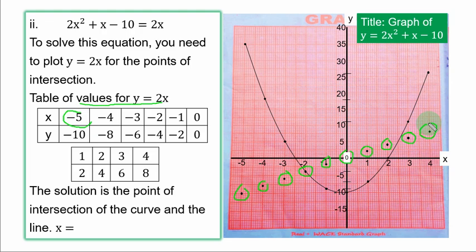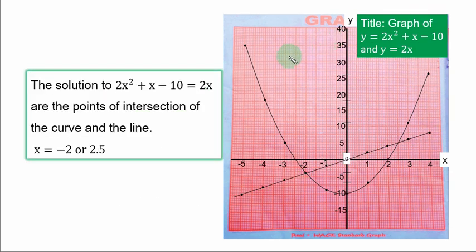And you are going to have a straight line graph. All the points have been joined together, and the title also updated. So the solution to 2s squared plus s minus 10 equal to 2s are the points of intersection of the curve and the line. When you trace this point down, you have 2.5. You trace this one up, you have minus 2 as the required solution.